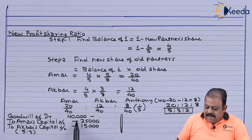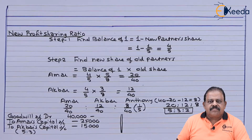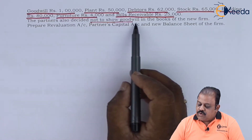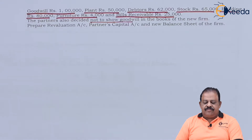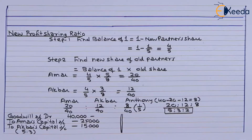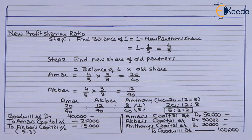Here, appreciation in goodwill is credited between Amar and Akbar. The partners decided not to show goodwill in the books of the new firm, so goodwill will now be written off. While writing off goodwill, it has to be written off among all partners using the new ratio, that is 5:3:2.